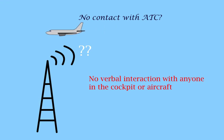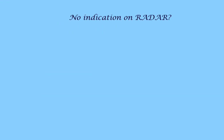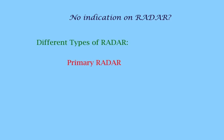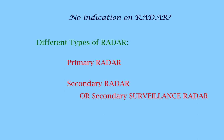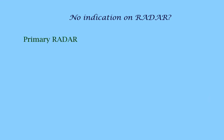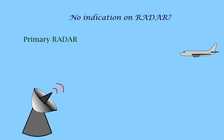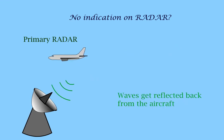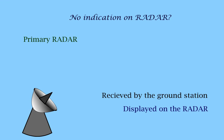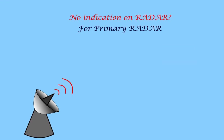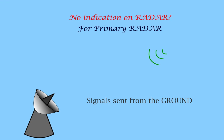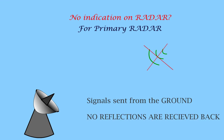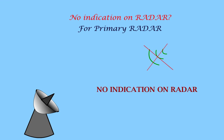To understand the loss of indications on the radar, we have to see the types of radar. We have a primary radar and a secondary radar, also called as the secondary surveillance radar. In the primary radar, signals are sent from the ground stations and they get reflected back from the aircraft, which are received and are displayed on the radar. In the primary radar, if the waves sent from the ground do not get reflected back, then there will be no indication on the radar.